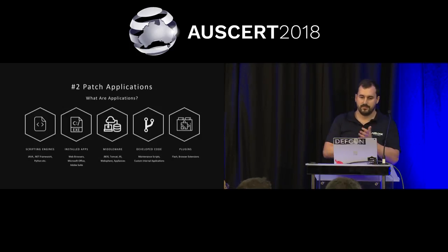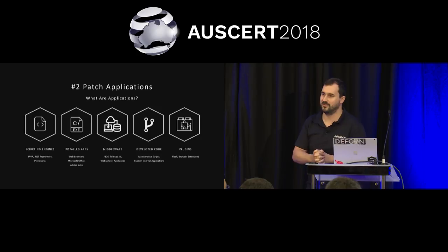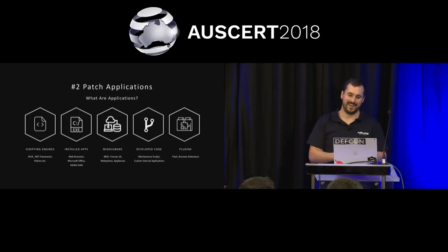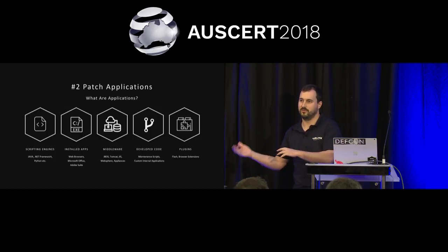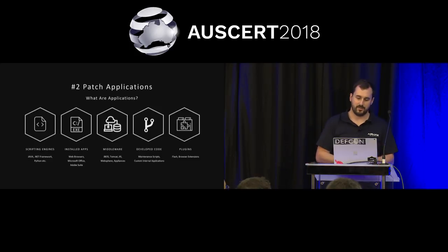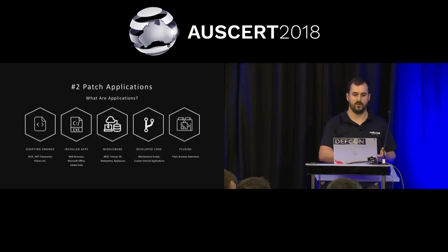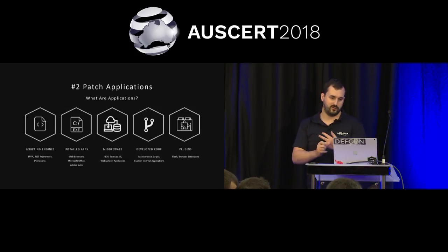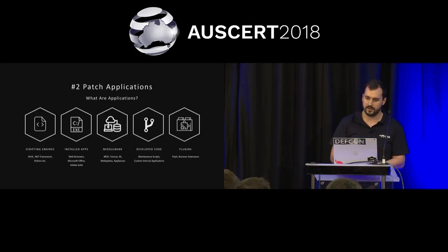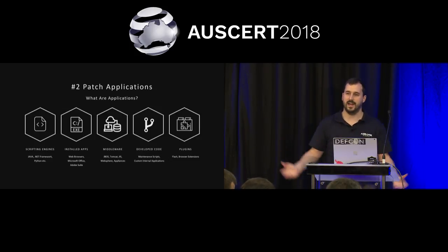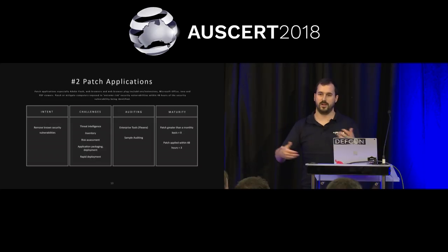Number two: patching applications. An important question nobody asks until they're having a debate later is: what are applications? An application is anything that runs on top of the system — typically Office, executables, any traditional applications, middleware, IIS, web servers, any developed code on top of your system that may have security vulnerabilities. Things like web browsers. Once we've defined that, it becomes a lot easier to have the discussion about what we need to patch and update.